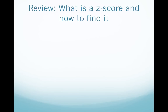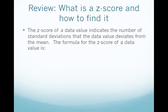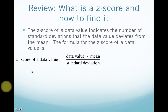Let's review the concept of a z-score and how we go about finding it. The z-score of a data value indicates the number of standard deviations that the data value deviates from the mean. In order to find a z-score you need to know the mean and the standard deviation. The formula for the z-score of a data value is: z-score equals the data value minus the mean divided by the standard deviation. So you need three pieces of information: the data value, the mean, and the standard deviation.